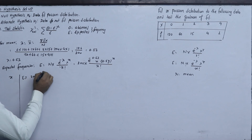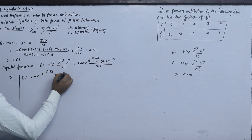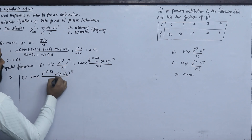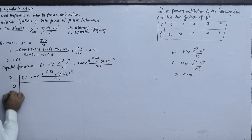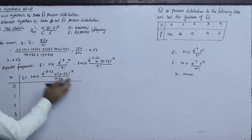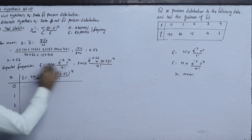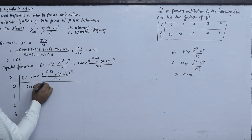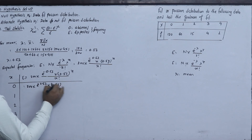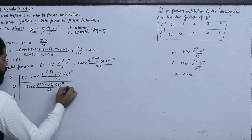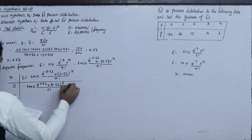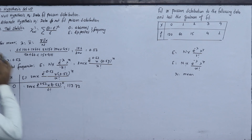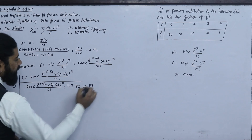We put x equal to 0, 1, 2, 3, 4 and calculate each expected frequency. For x=0: 200 × e^(−0.53) × 0.53^0 / 0! gives 117.72, which we round to 118.